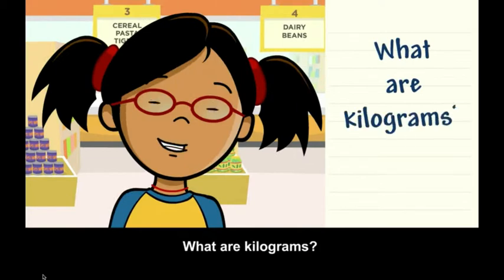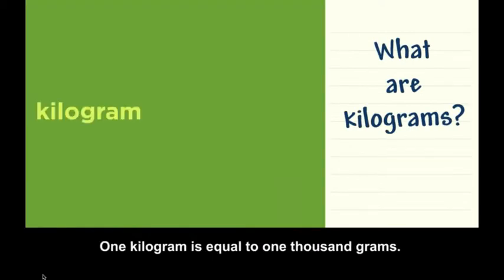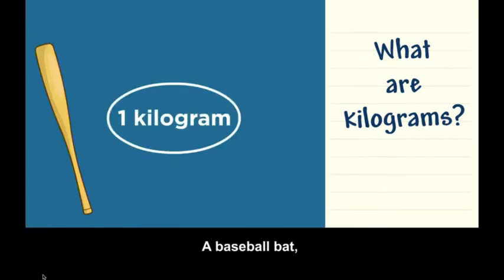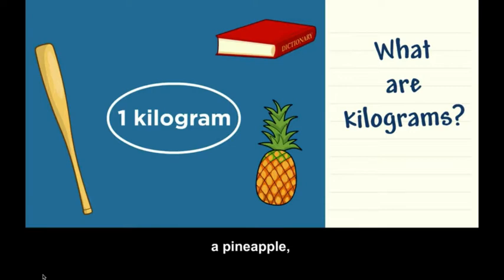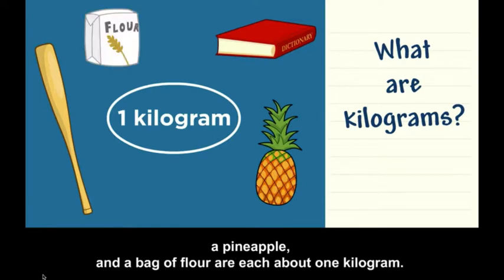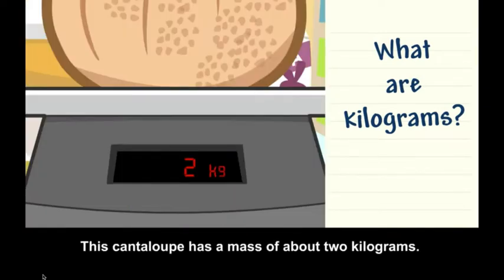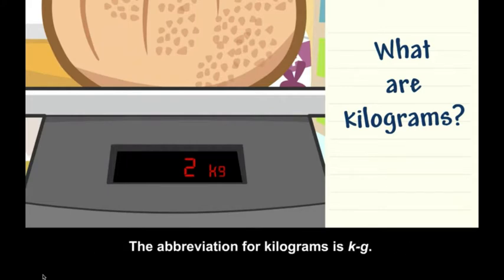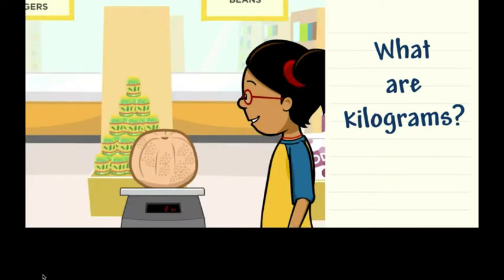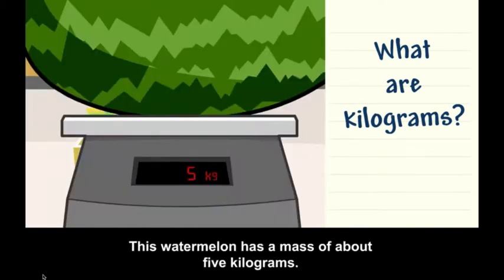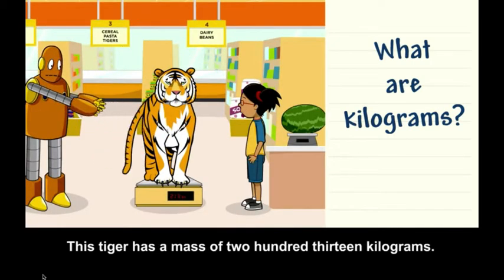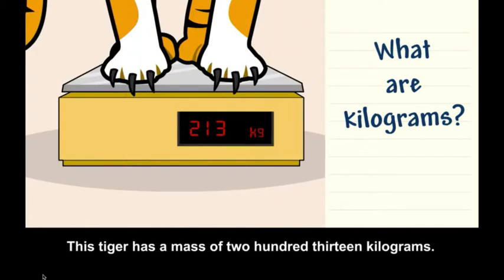What are kilograms? One kilogram is equal to one thousand grams. A baseball bat, a dictionary, a pineapple, and a bag of flour are each about one kilogram. This cantaloupe has a mass of about two kilograms — the abbreviation for kilograms is kg. This watermelon has a mass of about five kilograms. This tiger has a mass of about 213 kilograms.